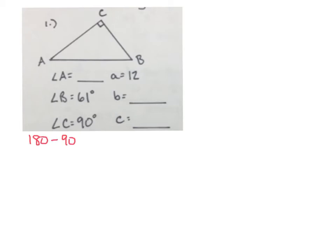I've already used 90 degrees for angle C and 61 degrees for angle B. So when I subtract them off, then I'm just left with angle A. And so just doing that subtraction, you should get 29, making angle A 29 degrees.